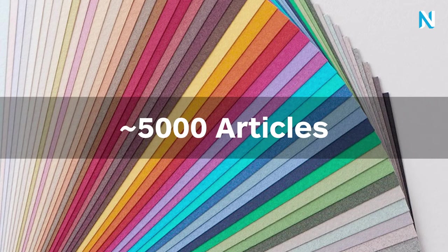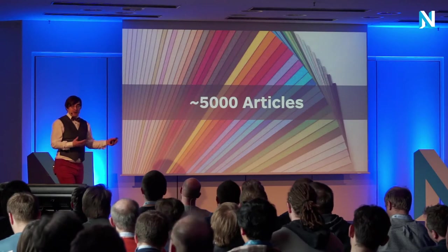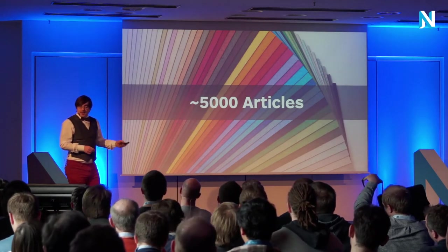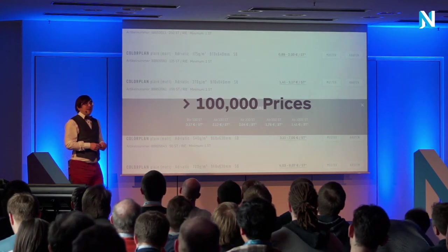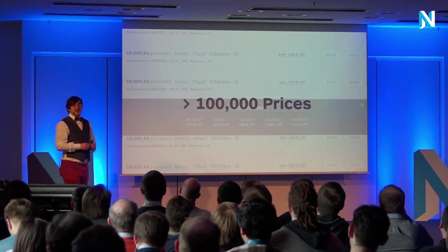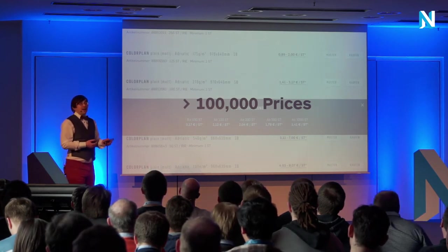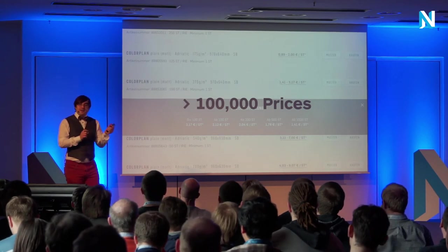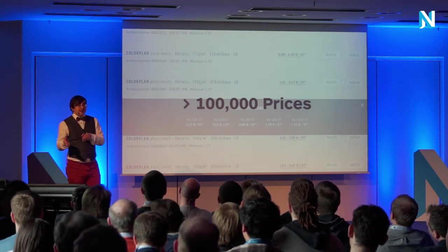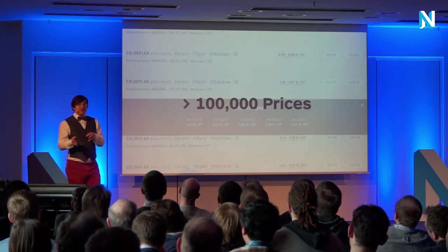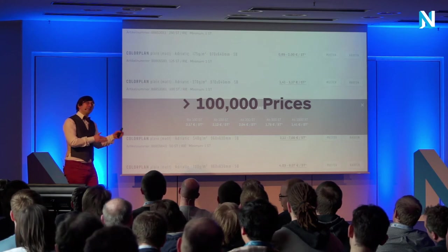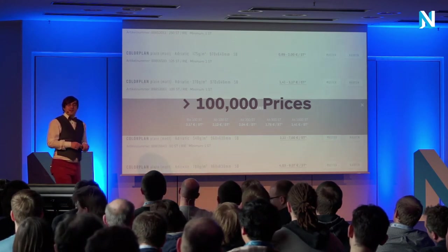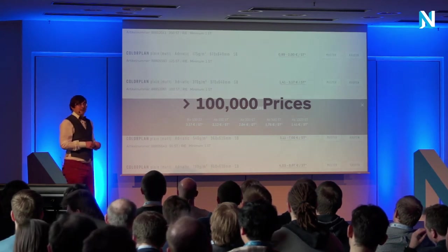We were confronted in the beginning of the project with the amount of data. We have these 5,000 articles — but then on top of that, we have over 100,000 prices for those articles, because the paper business is an analog business. You don't have one price per paper; the more you buy, the cheaper it gets. There are multiple prices per paper depending on how many you buy, plus customer-specific prices on top. That sums up to over 100,000 different product data items we get from their system.